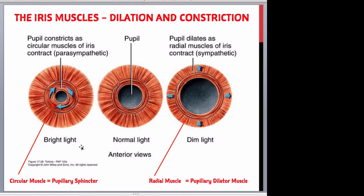Bright light stimulates the parasympathetic neurons that cause the circular muscle — the pupillary sphincter — of the iris to contract. This causes the pupil to constrict and decreases the amount of light that can enter the eye. Dim light, on the other hand, stimulates the sympathetic neurons that cause the radial muscles — the pupillary dilator — of the iris to contract, causing the pupil to dilate and increase the amount of light that enters the eye.